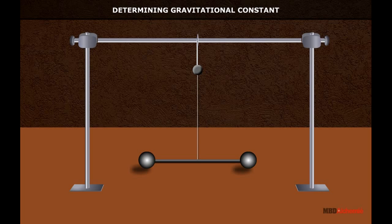In Cavendish's experimental setup, two equal small lead spheres A and B, each of mass M, are attached at the ends of the bar AB of length L. The bar AB is suspended from the ceiling.